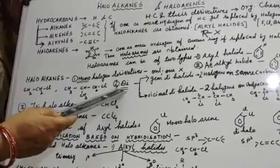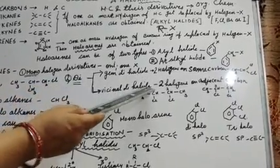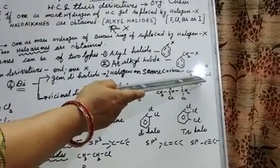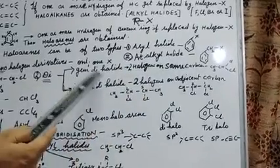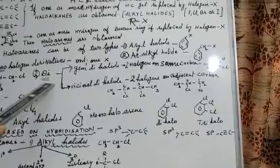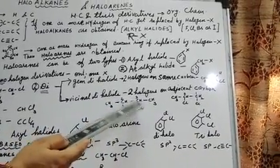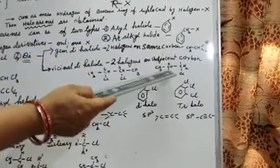Dihalogen Derivatives can be of two types: Gem Dihalide and Vicinal Dihalide. Gem means two Halogens are present on the same carbon — for example, CH3CH with two Halogens on the same carbon. Vicinal Dihalide means Halogen atoms are on adjacent carbons, like positions 1,2 or 2,3. So Gem means same carbon and Vicinal means adjacent carbon.